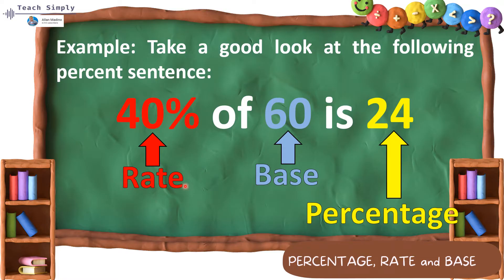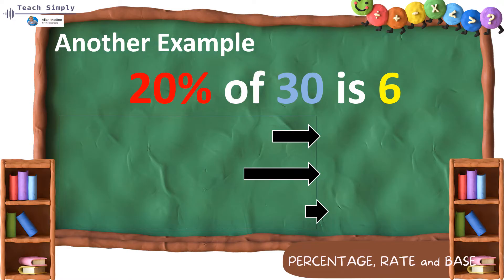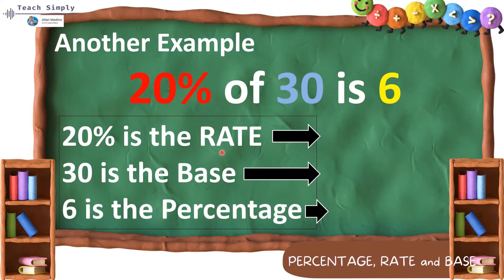So again, meron na tayong rate, meron na tayong base, at meron na tayong percentage. Now, look at this other example. 20% of 30 is 6. Again, 20% of 30 is 6. Now, 20% is our rate. And then, 30% is our base. And 6 is the percentage. So, ulitin ko, in this example, 20% is our rate. 30 is our base. And 6 is our percentage.